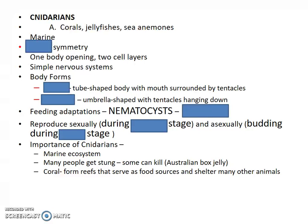Our next group are the cnidarians, Phylum Cnidaria. This includes your corals, your jellyfishes, your sea anemones. These are your stinging organisms. They are all marine — meaning salt water — so they're not freshwater organisms. These do have radial symmetry, which means they can be cut in half along many planes and still have right and left sides.